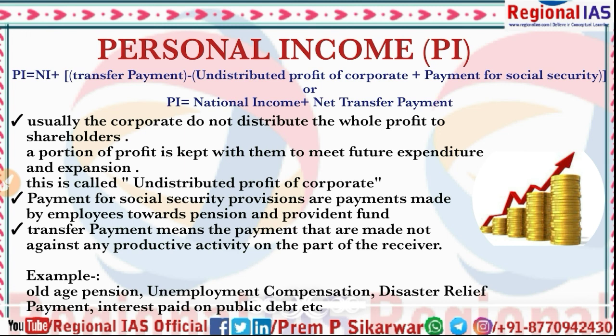Now, what is personal income of a country? Personal income (PI) equals national income plus net transfer payments, minus undistributed profit of corporate, plus payment for social security provisions. Let me explain each term in this formula so it becomes clear.